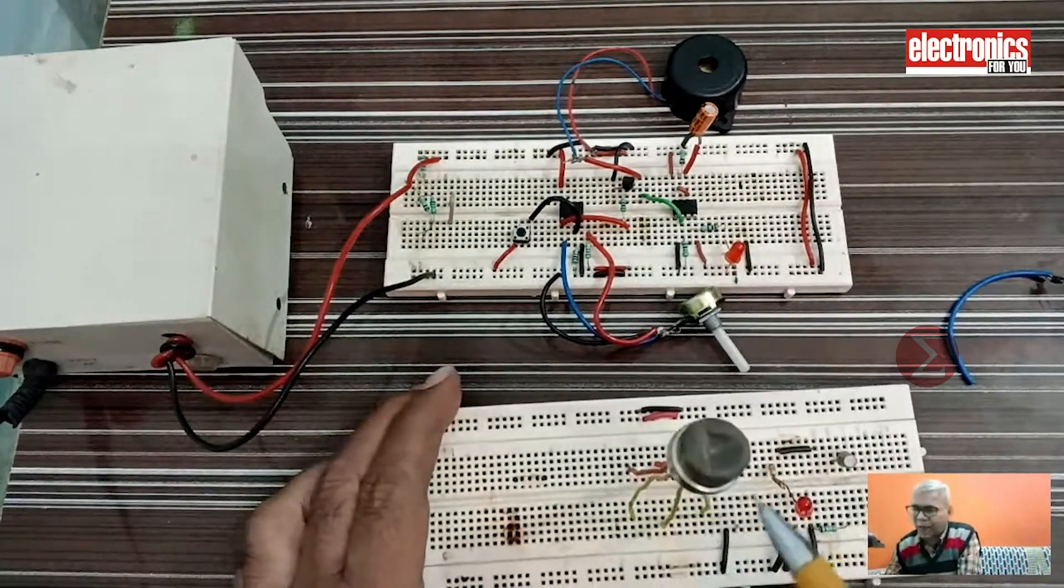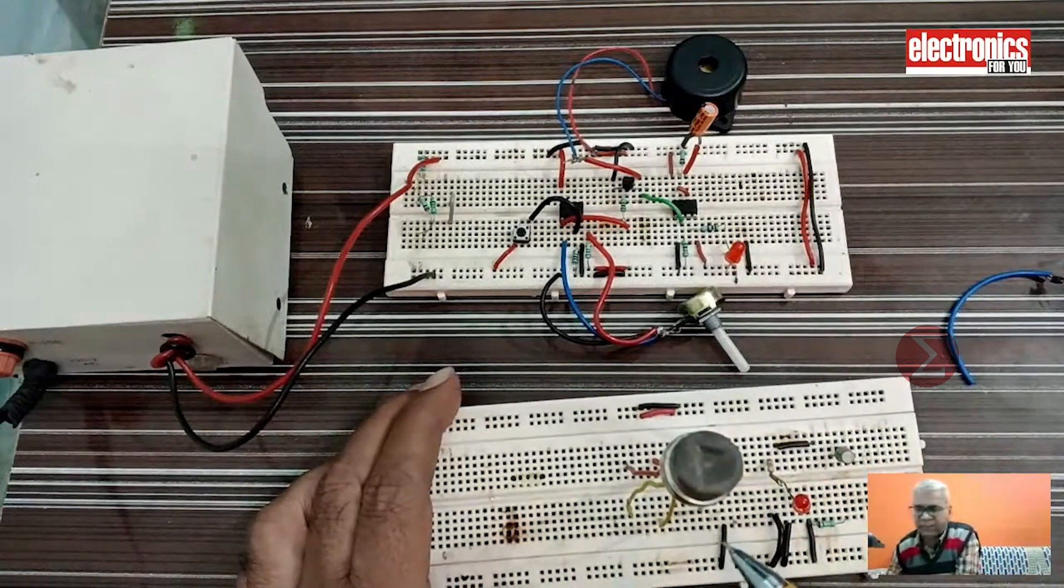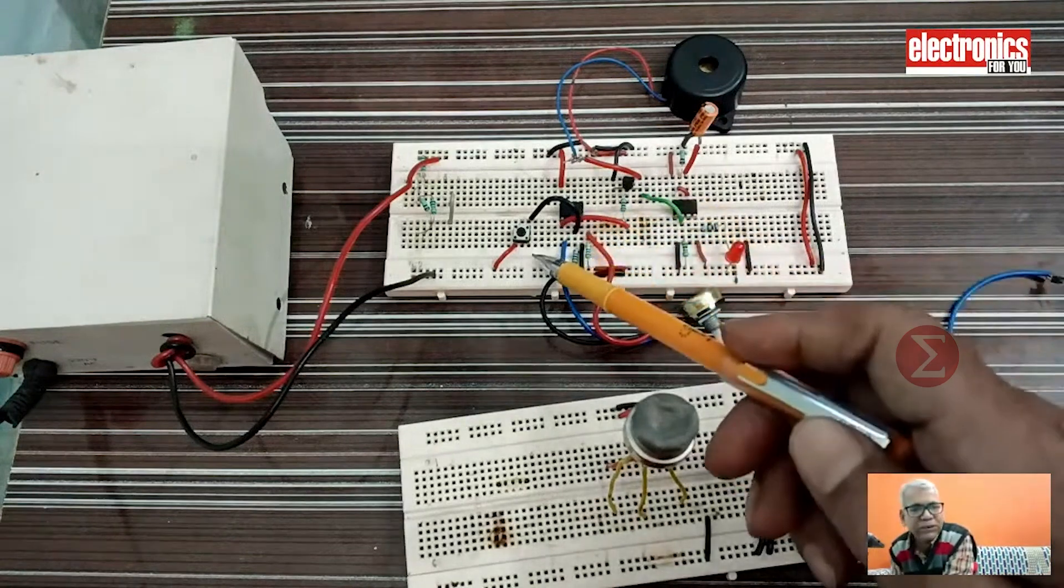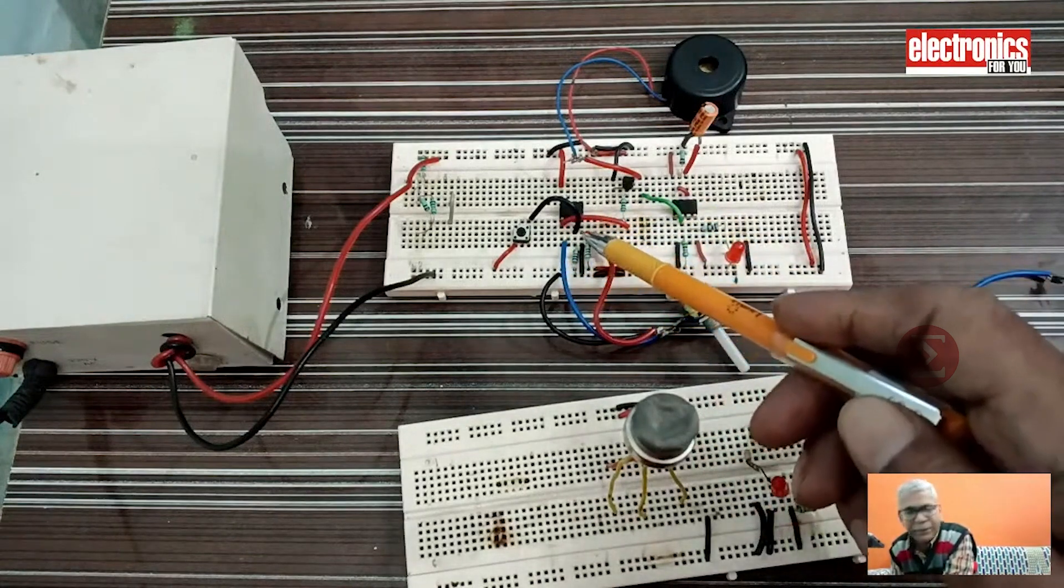We are representing this high output by a push button in our prototype. This output of our sensor is connected to the non-inverting input of one of the operational amplifiers.